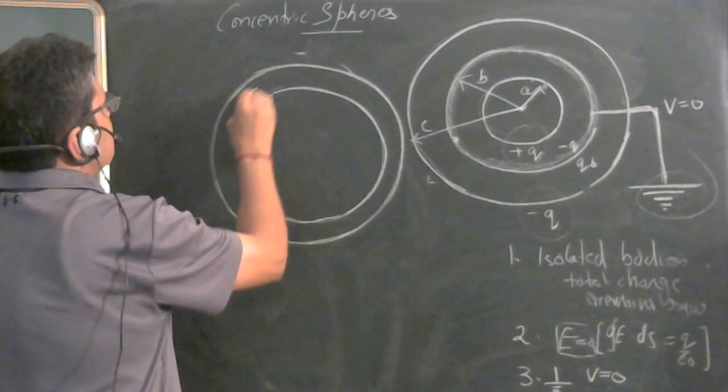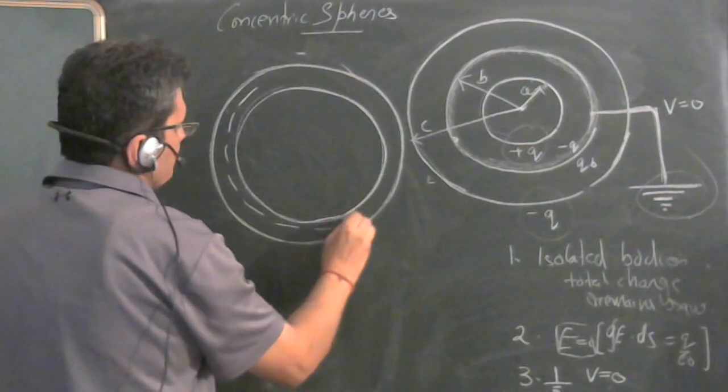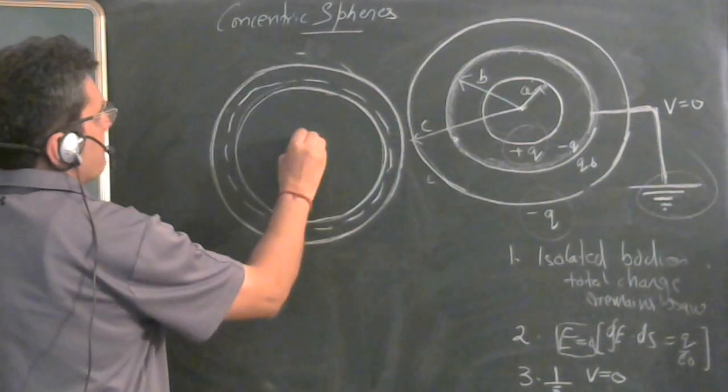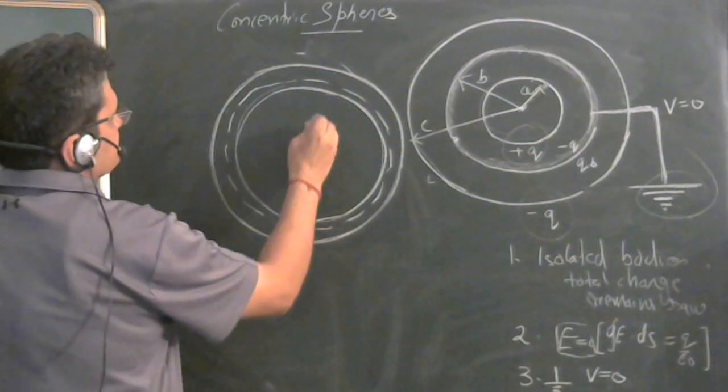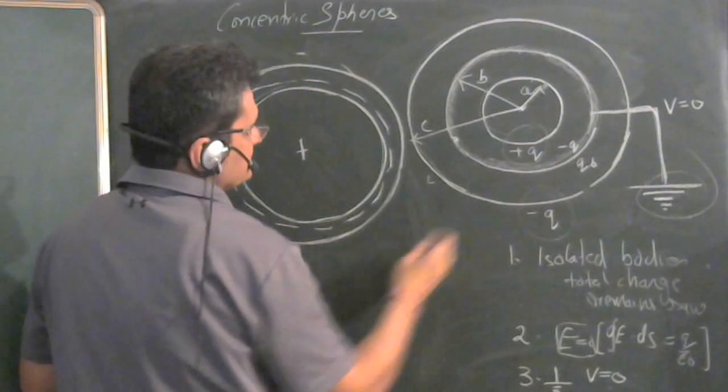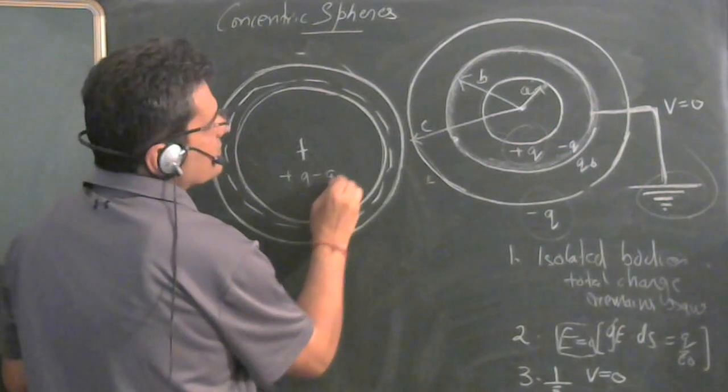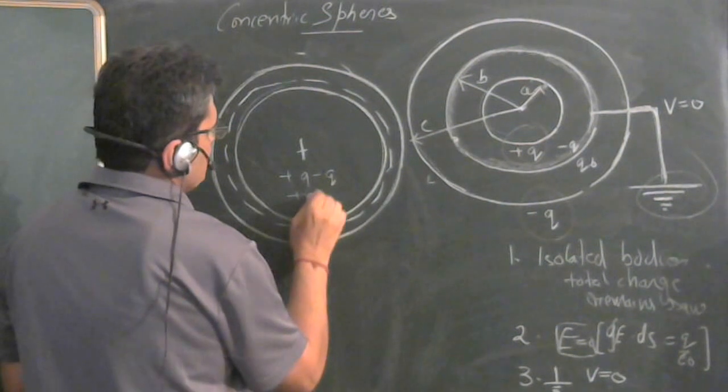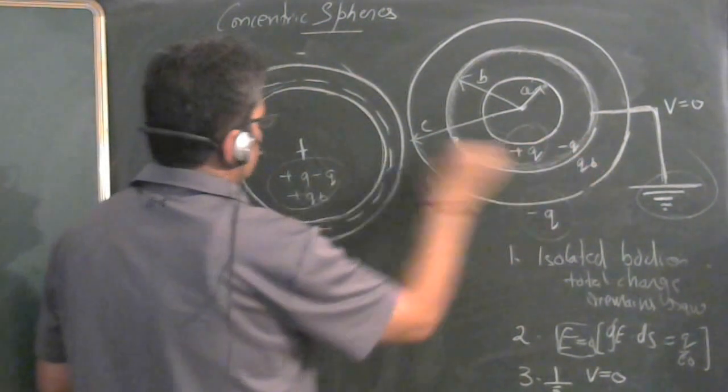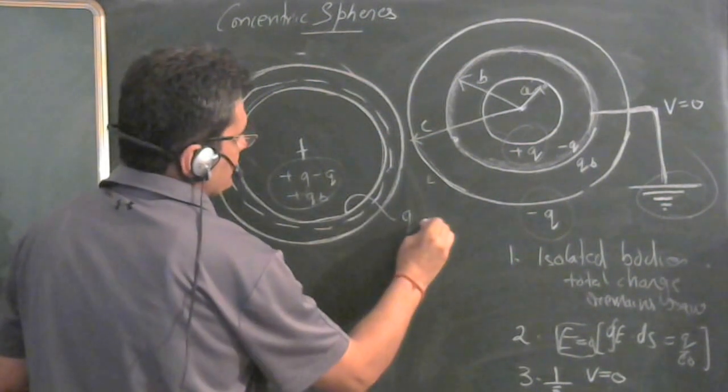So this is the Gaussian surface. And what are the charges inside? So far, if we move outwards, the charges inside was plus Q, minus Q, plus QB. These were the charges: plus Q, minus Q, plus QB inside. Let there be a charge QC here.